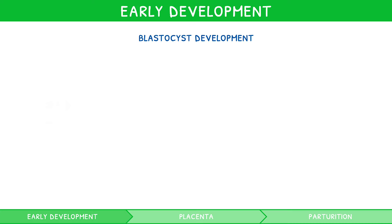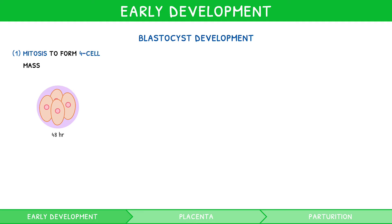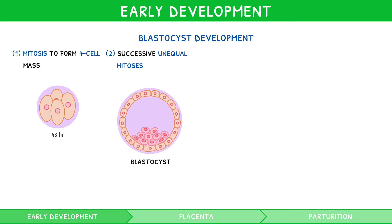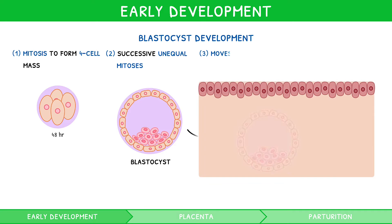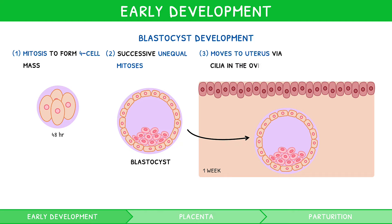Development of the blastocyst begins when the two-cell zygote undergoes mitosis to form a four-cell mass by 48 hours post-fertilization. Successive mitotic divisions are unequal, and combined with cellular migration, this results in the formation of a hollow ball known as a blastocyst. By one week of age, the blastocyst consists of 125 cells and has been moved to the uterus by the cilia lining the oviduct.